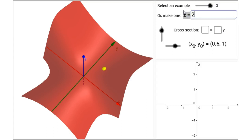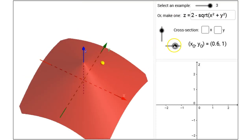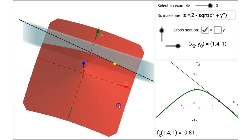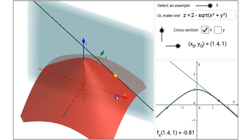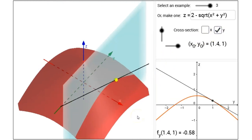Let's say, for example, f of x equals 2 minus the square root of x squared plus y squared. Move the point around. Look at some cross-sections and see for yourself how the partial derivative with respect to x and the partial derivative with respect to y are reflected in the figure.